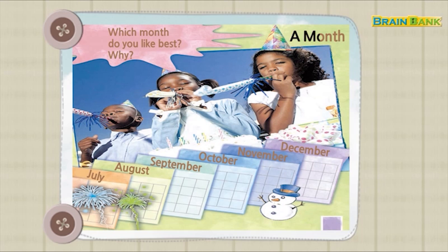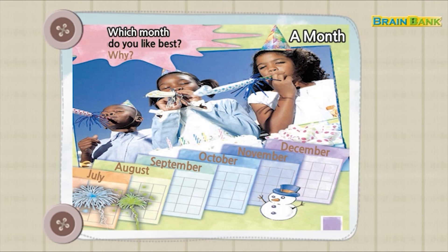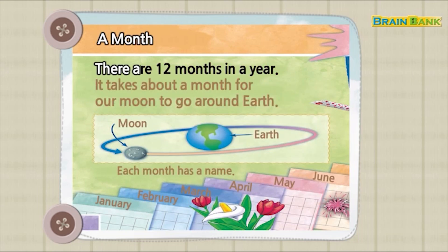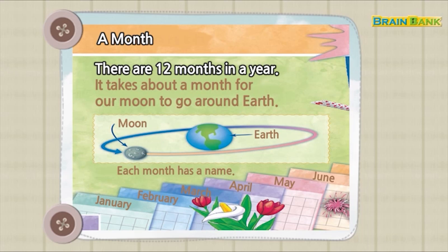A month. Which month do you like best? Why? There are 12 months in a year. It takes about a month for our moon to go around Earth.